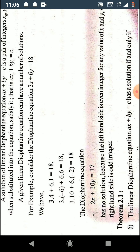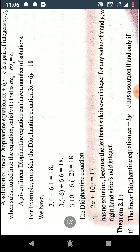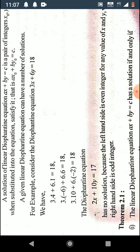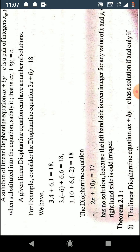Now consider the Diophantine equation 2x plus 10y equals 17. Observe that the left-hand side is always even, because for any integer x, 2x is even, and for any integer y, 10y is even. Even plus even is again even, so the left-hand side is always an even integer, but the right-hand side 17 is odd.